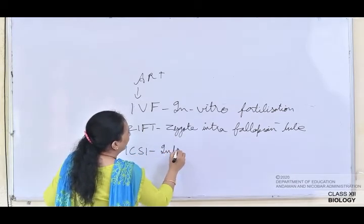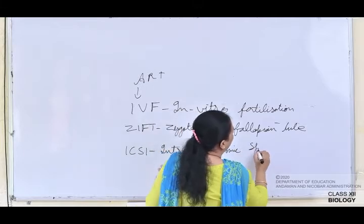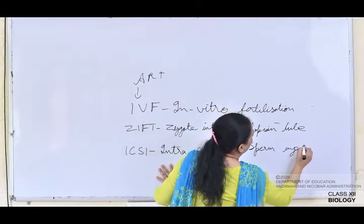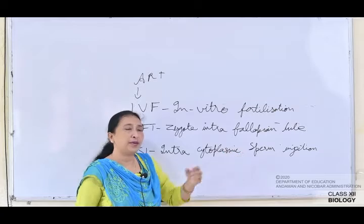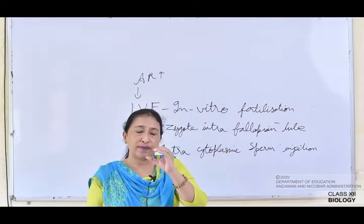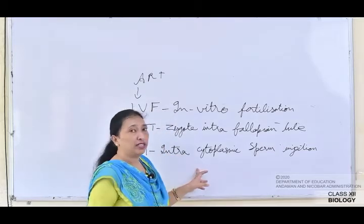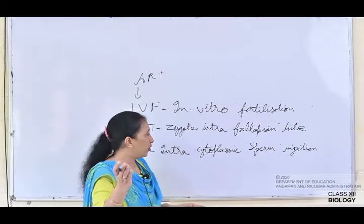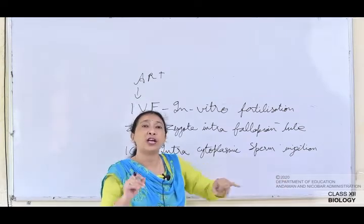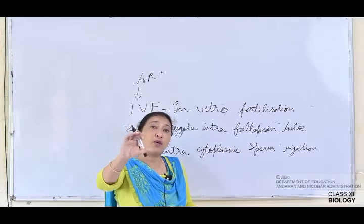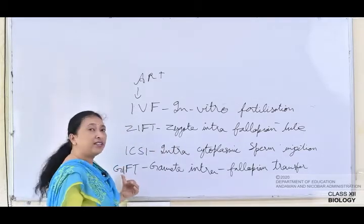ICSI — Intra Cytoplasmic Sperm Injection. Unlike IVF where many sperms are needed, in ICSI only one sperm is transferred directly to the focal point of the egg. There is a 75 to 85 percent chance that the zygote will be formed. The sperm is directly transferred to the focal point of the egg and further development takes place.